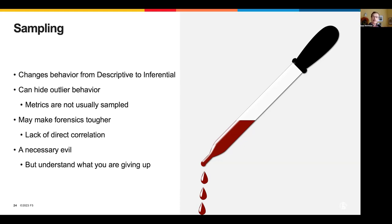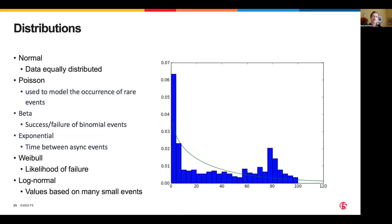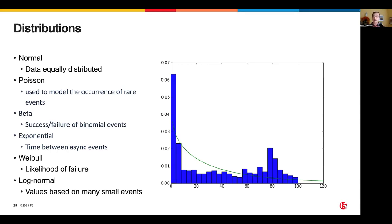Generally speaking, we use distributions to help understand trends and patterns. A normal curve — or Gaussian distribution — is the standard bell-shaped curve, most commonly used to model lead times and cycle times showing roughly symmetric distribution. We can also have Poisson for rare occurrences, beta for A-B testing, exponential for time between asynchronous events, Weibull for likelihood of failure, or log-normal where the log may look like a normal distribution even though the data itself does not.